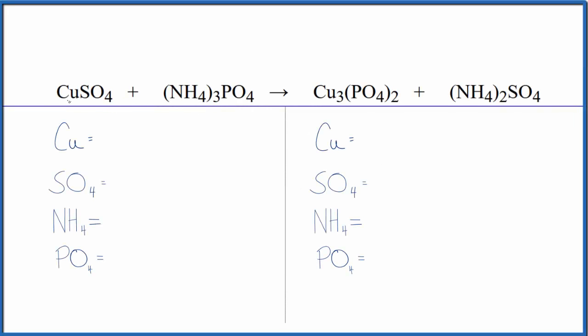In this video we'll balance the equation for copper sulfate plus ammonium phosphate. We use a bit of a trick to make this much easier. We'll start out by counting up the atoms on each side of the equation.